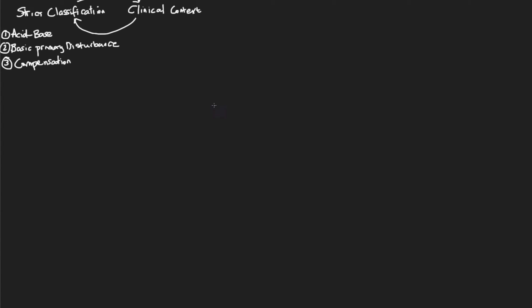So we're looking at the ABCs of ABGs. This ABC approach maps directly onto our three steps: acid-base status, basic primary disturbance, and compensation. That's going to be our three steps to getting a good strict classification of blood gases. The first step is the acid-base status.